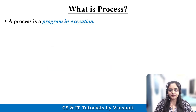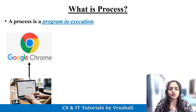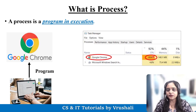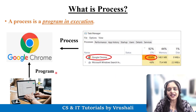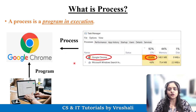The first question is: what exactly is a process? Let's understand with an example. Suppose when a user clicks on Google Chrome application, that is called a program — Google Chrome is the program. But when Google Chrome is loaded into memory, it requires CPU processing power, memory, and storage. This is called a process. So as per the definition, process means program in execution. When it is loaded into memory for execution, it is called a process.